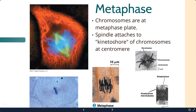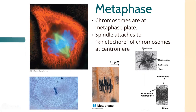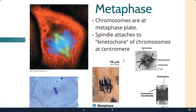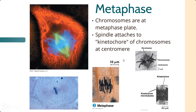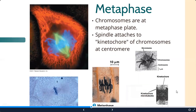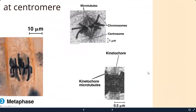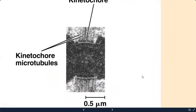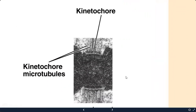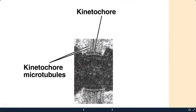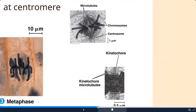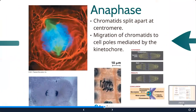At metaphase, the spindle fiber locks into the centromere at a structure called the kinetochore - it literally hooks in, making a stronger connection. The kinetochore is very small, about 0.5 microns. It's at this point that the chromatids can actually be pulled apart.